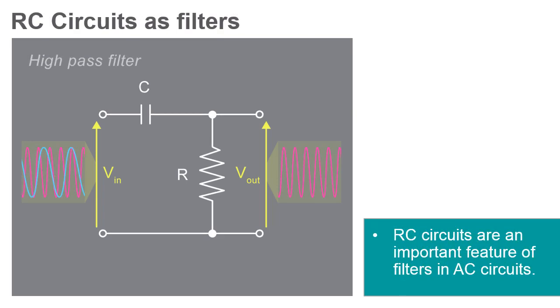RC circuits are an important feature of filters in AC circuits. If we pass an AC voltage signal through an RC circuit, the shape of the waveform is unchanged, but its amplitude is affected.